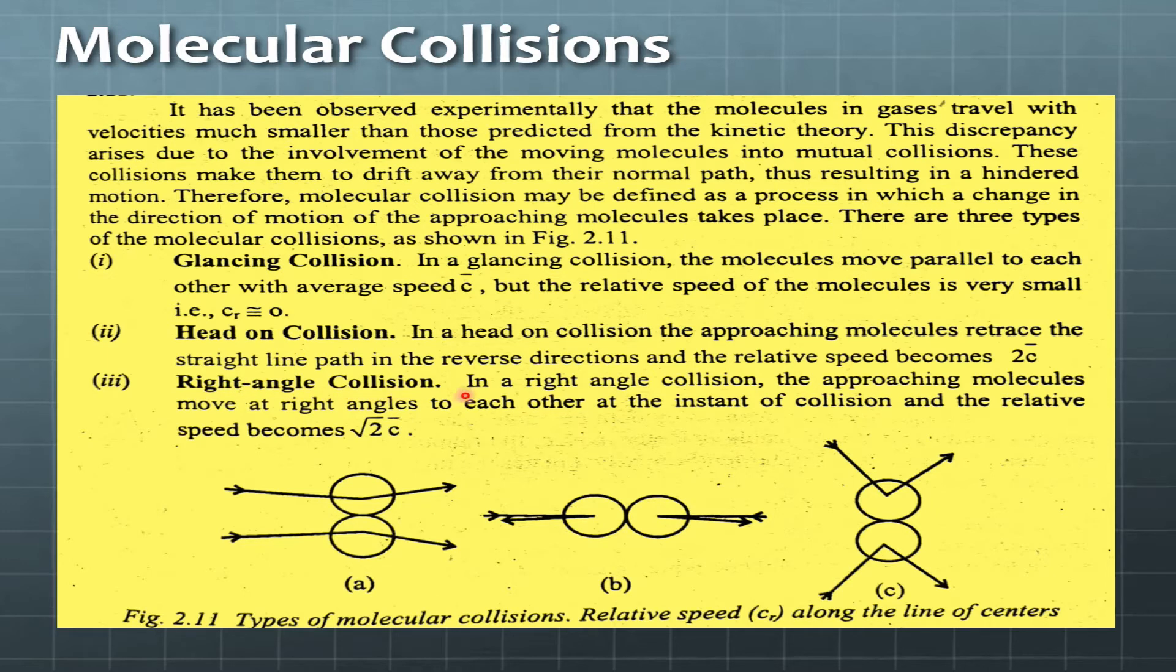In a right angle collision, the approaching molecules move at a right angle to each other at the instant of collision and the relative speed becomes root 2 times c bar. In this, see this molecule was coming from this side and this molecule was coming from this angle. When they collide, at the point of contact, the right angle forms. It was coming from this angle and turned at this angle, so this is a ninety degree angle. This is also a ninety degree angle, so we call this right angle collision.